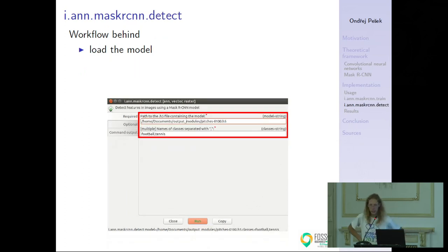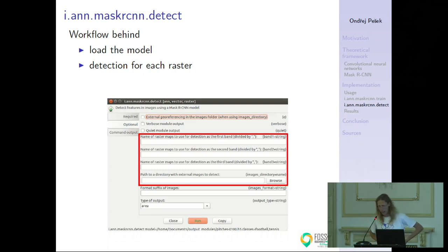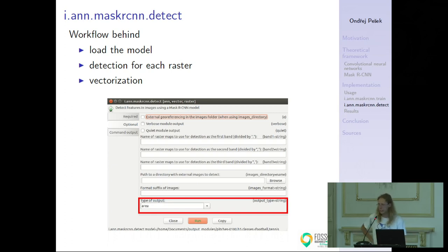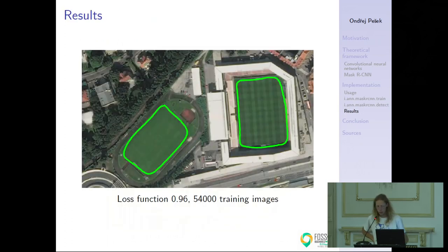Then you start detection, which means loading the model again and passing some rasters — these can be maps already imported in GRASS GIS or external georeferenced raster files. The user can specify whether to represent detected instances as points or areas (polygons). For example, with sick trees it's enough to detect them as points; having a polygon in the shape of the tree would be overkill.